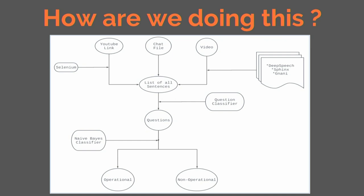We are segregating operational data. Here we see three input data: YouTube link, chat file, and video. Selenium is used to extract YouTube chats from the YouTube link. We have worked on many softwares to extract speech to text. There is a list of sentences which are then passed to a question classifier and we extract the questions. Finally, a name-based classifier is used to predict whether a sentence is operational or non-operational.